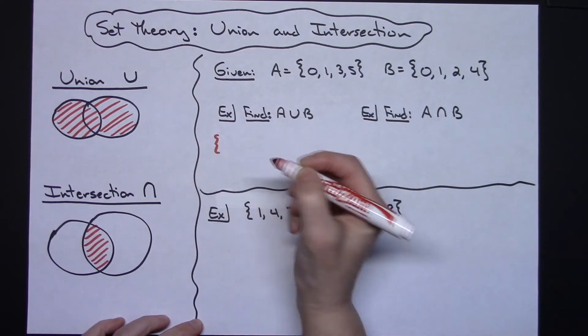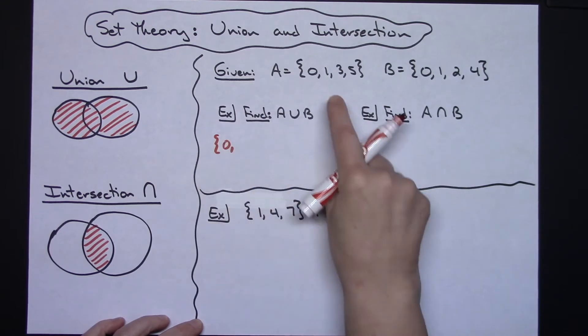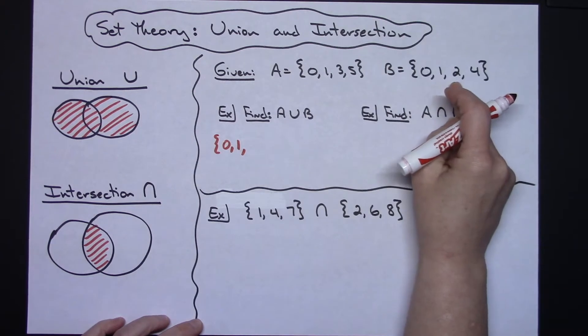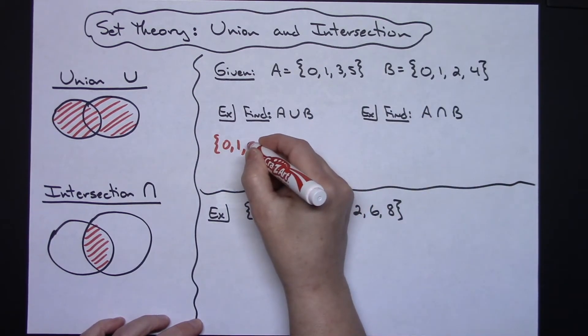Now there's a 0 in both of them; however, I'm only going to write that 0 one time. There is a 1 in both of them. There is a 2 in this one, so I have to include it because I'm including every number in both of the sets.